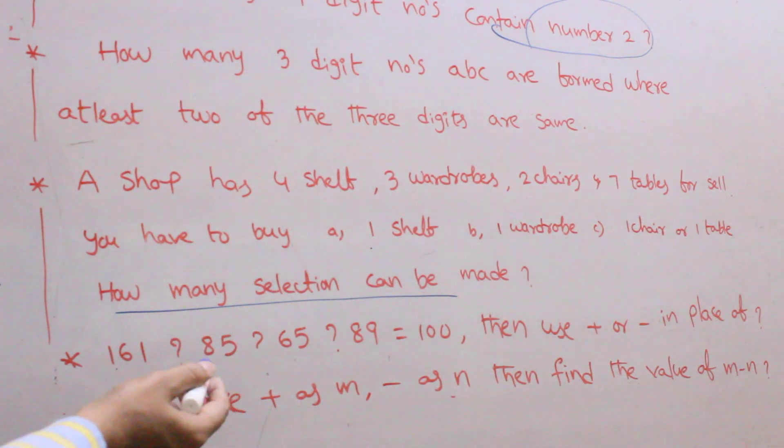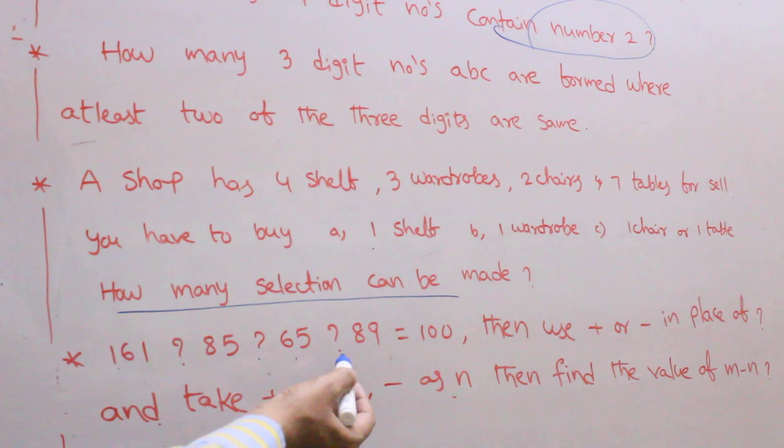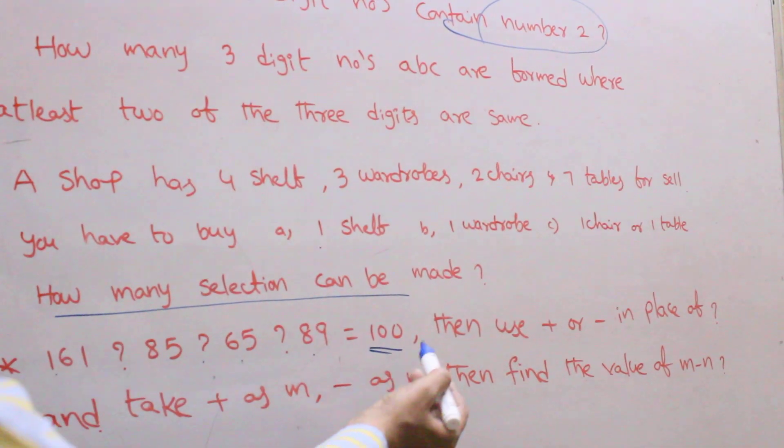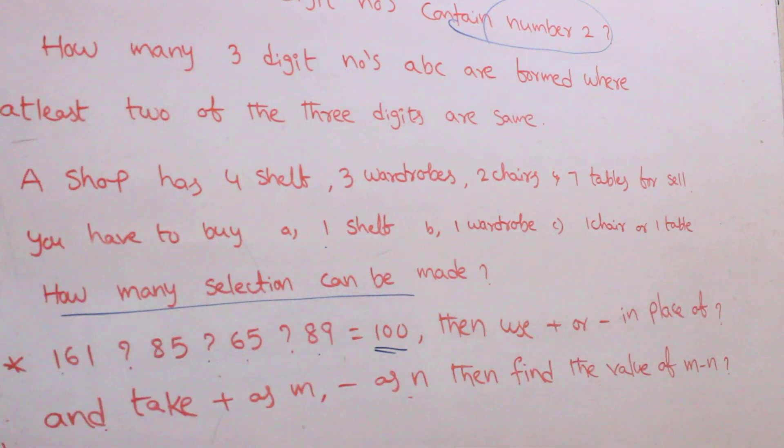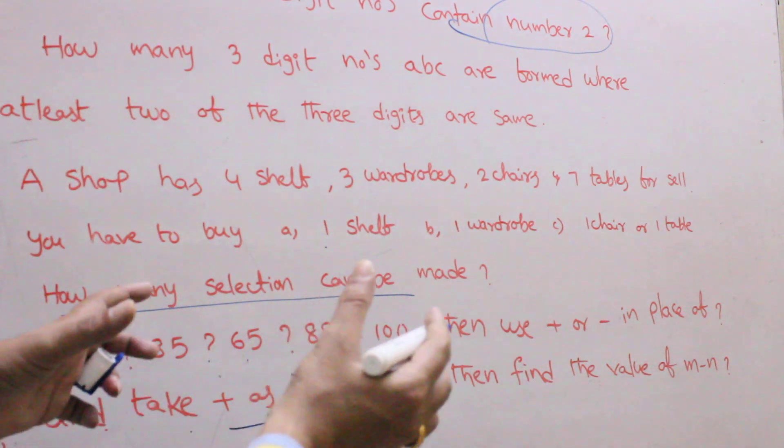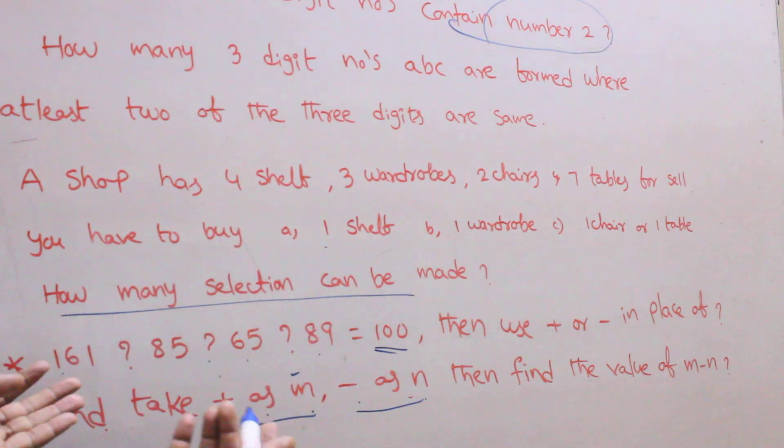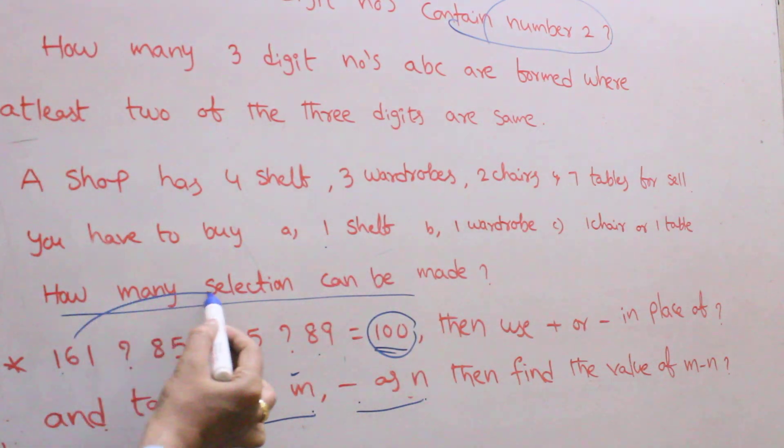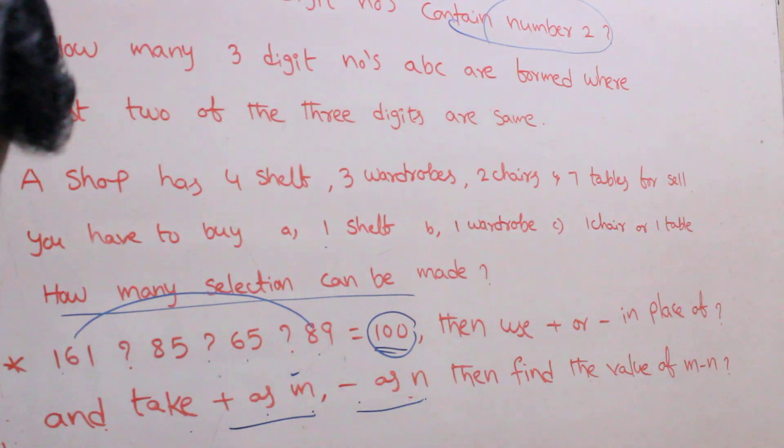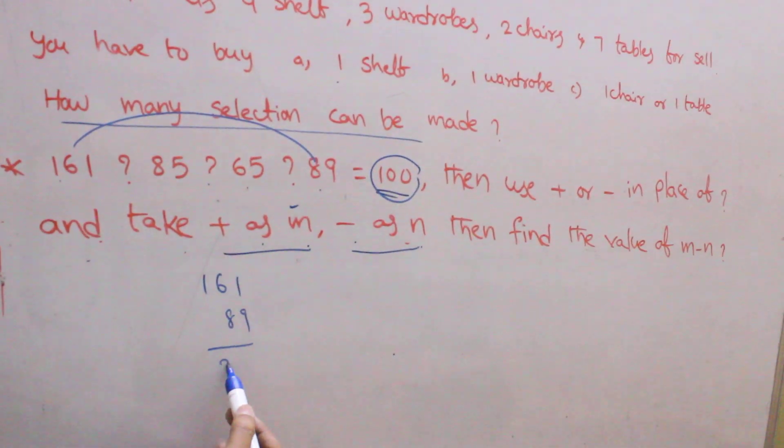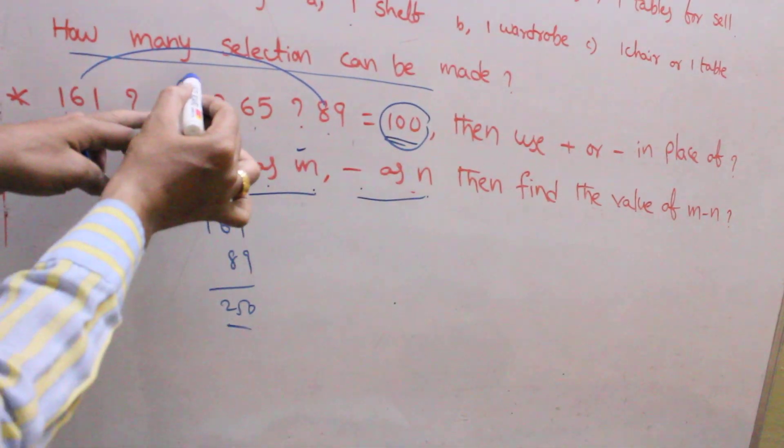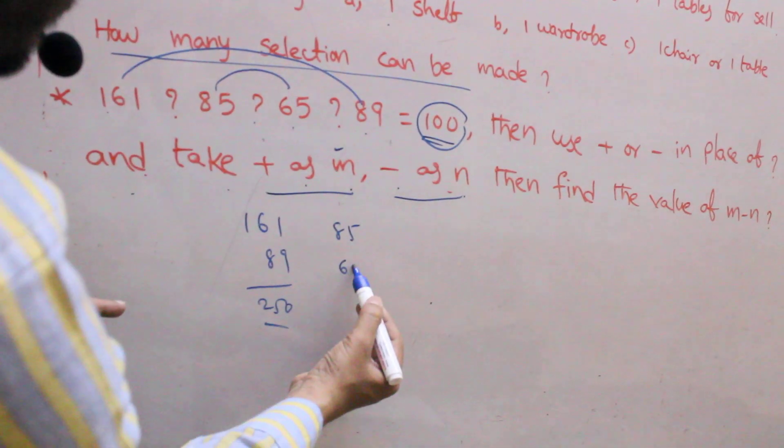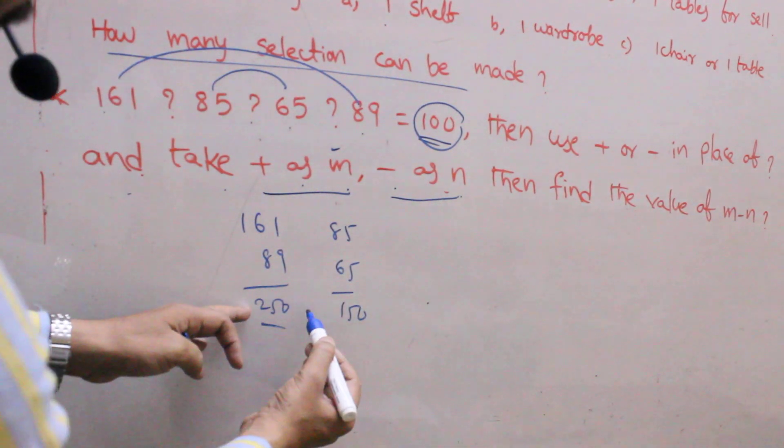Next coming to the next question. 161, 9, 85, 7, 65, 9, 89, that is equal to 100. Then use plus or minus symbols in place of question mark and take plus as m, minus as n. Then find the value of m minus n. Suppose any operation using plus or minus, the resultant value get the 100. Just observe this one. 161, 89, plus 161, 89, how much? 250. Next observe this one, both adding this one, 85, 65, how much? 150. 250 minus 150?